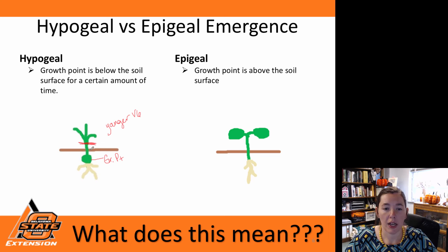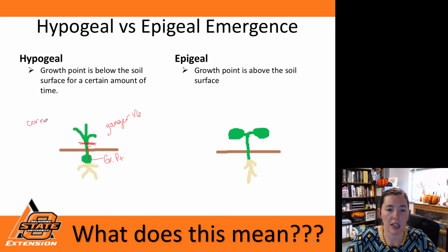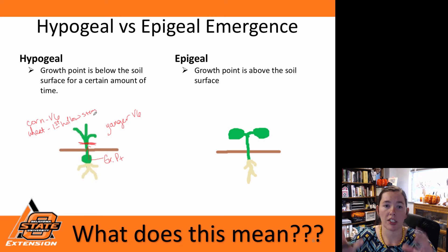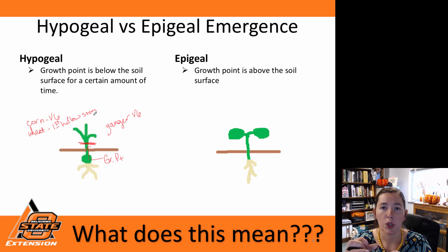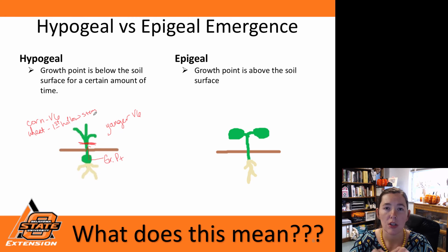Unless an animal pulls the entire plant out of the ground — then you've lost that plant because the growth point has been removed. In corn, this growth point typically moves above ground at V6. For wheat, what we're looking for is that first hollow stem — specifically a dime-sized hollow stem. If we look closely, you can actually see the seed head coming up and emerging through the main stem on a wheat plant.